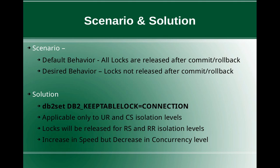For queries running under UR and CS isolation levels repeatedly within the same connection across multiple transactions, you will find an increase in speed and performance. However, there will be a decrease in concurrency level because locks are not released at transaction boundaries. The locks are persisted in the lock list memory area, thereby reducing the amount of memory available for other applications to place their locks. Other applications might have to do lock escalation or work with a reduced lock list memory area.